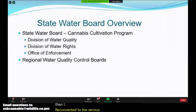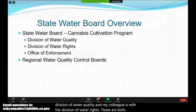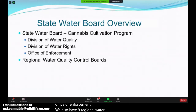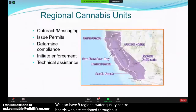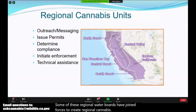I'm with the State Water Board Division of Water Quality and my colleague is with the Division of Water Rights. These are both based in our headquarters in Sacramento along with our Office of Enforcement. We also have nine regional water quality control boards stationed throughout the state. Some of these regional water boards have joined forces to create regional cannabis units, for example the South Coast Cannabis Unit or the Eastern California Cannabis Unit.